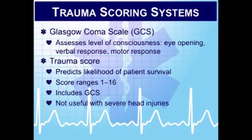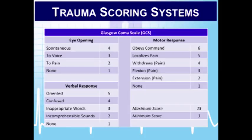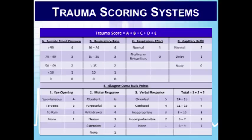The trauma score is basically a predictor of the likelihood of patient survival. Scoring is from 1 to 16, with 16 being the best. It looks at the GCS, respiratory rate, respiratory expansion, systolic blood pressure, and capillary refill. It does not accurately predict survivability in patients with severe head injuries, so we need to remember that. The GCS is simpler; the trauma scoring system is more complicated, but both have their places in the care of our trauma patients.